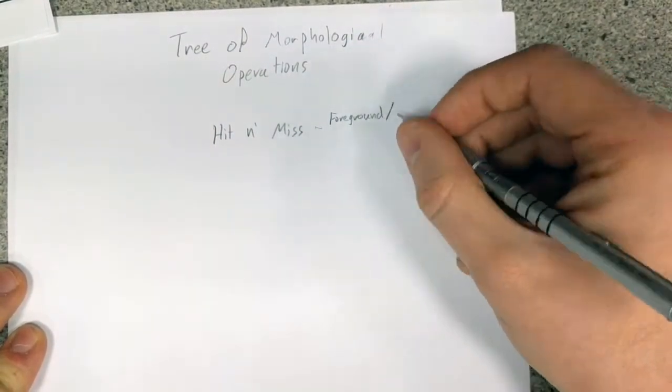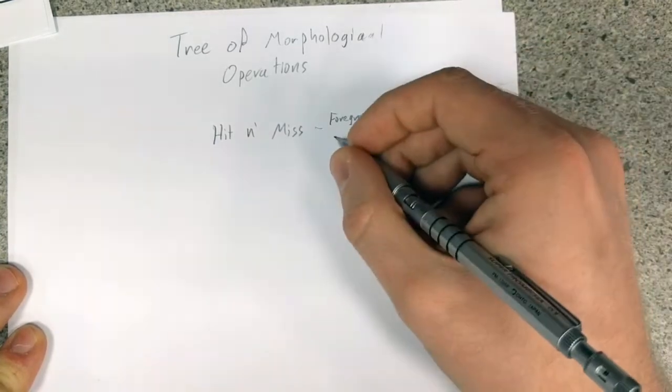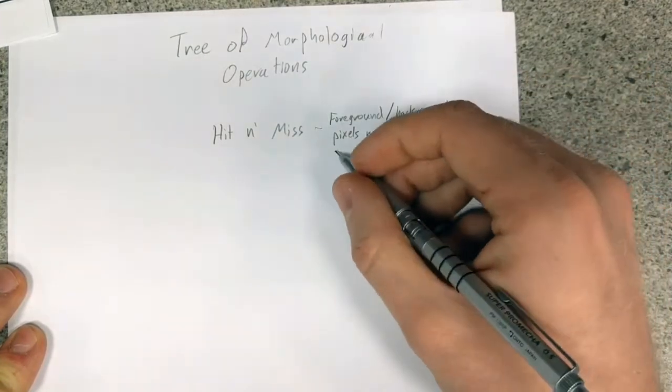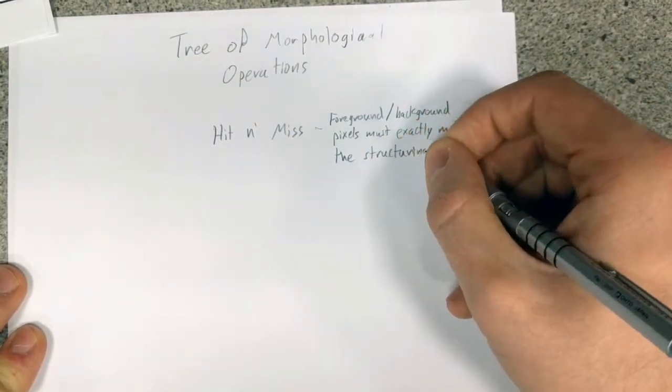the hit and miss operator requires that the portion of the image being compared matches the structuring element exactly. All foreground bits must match, as well as all background bits.